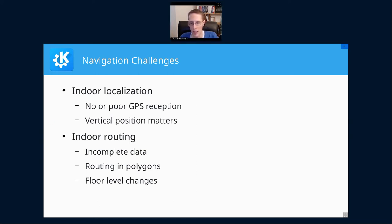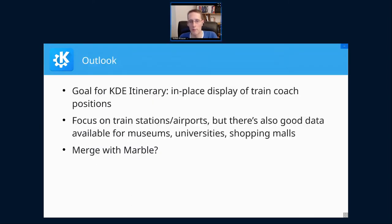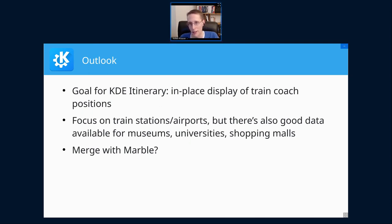There are a few more things to look out for. The thing that actually started this whole work is wanting to have train coach positions properly displayed on the map — if you have a seat reservation, that's the information you need to know where to go on the platform. We have the map and itinerary has the coach layout, but we're missing one crucial piece: in which direction the train goes onto the map. Hopefully we'll eventually find a solution for that, and it's also a prerequisite for proper routing.